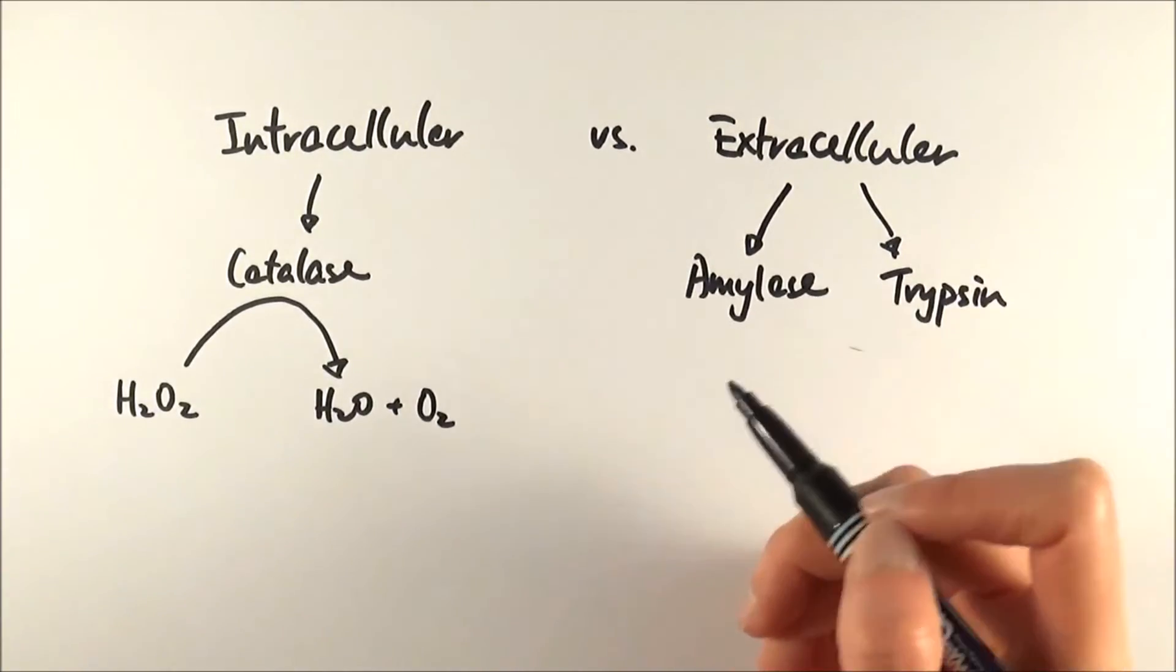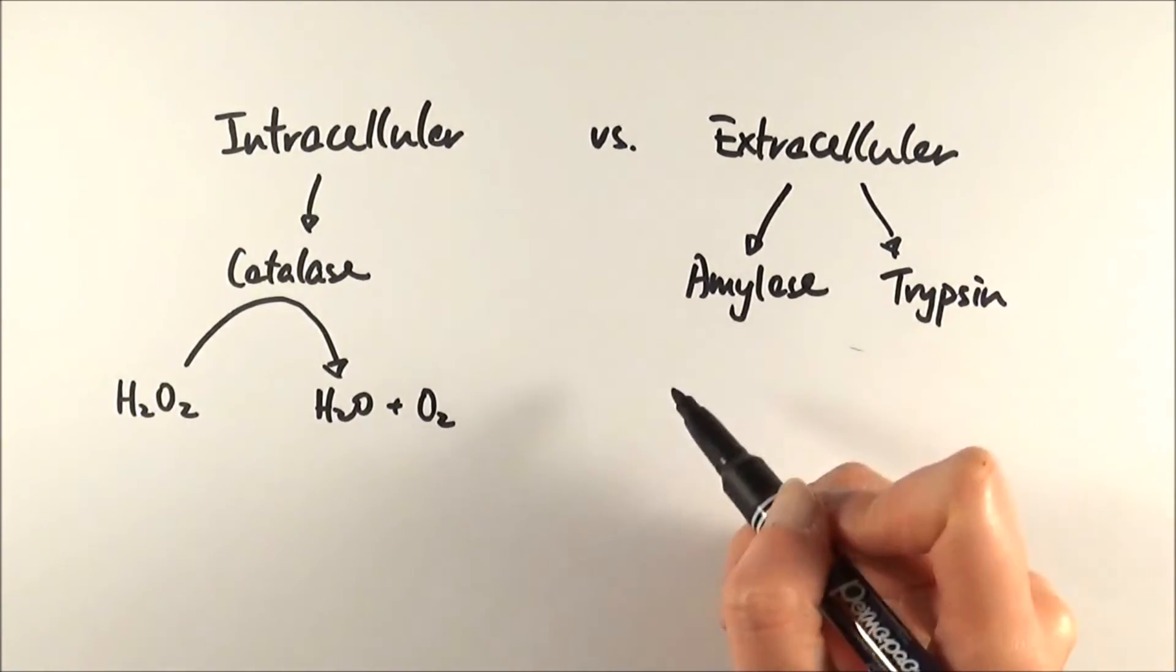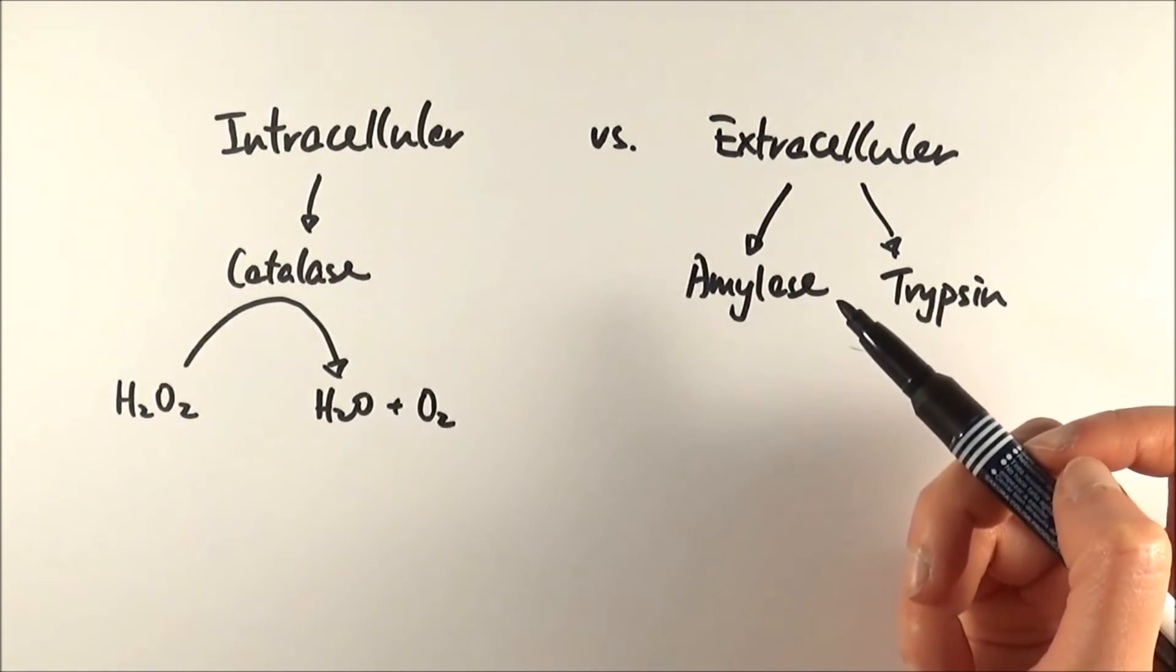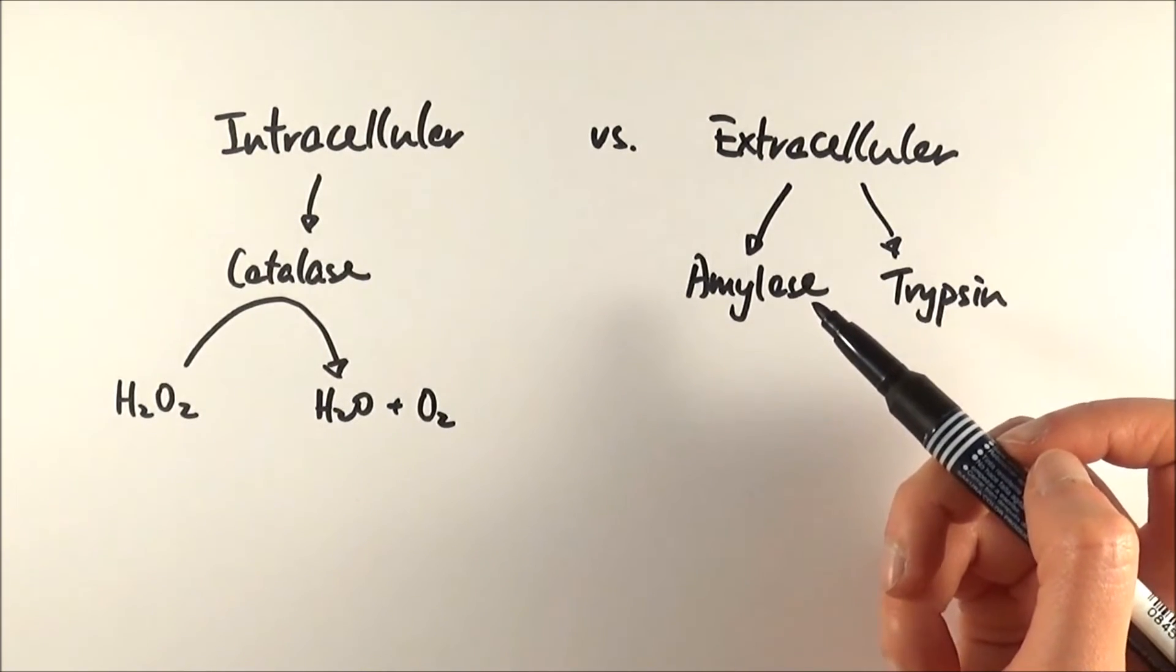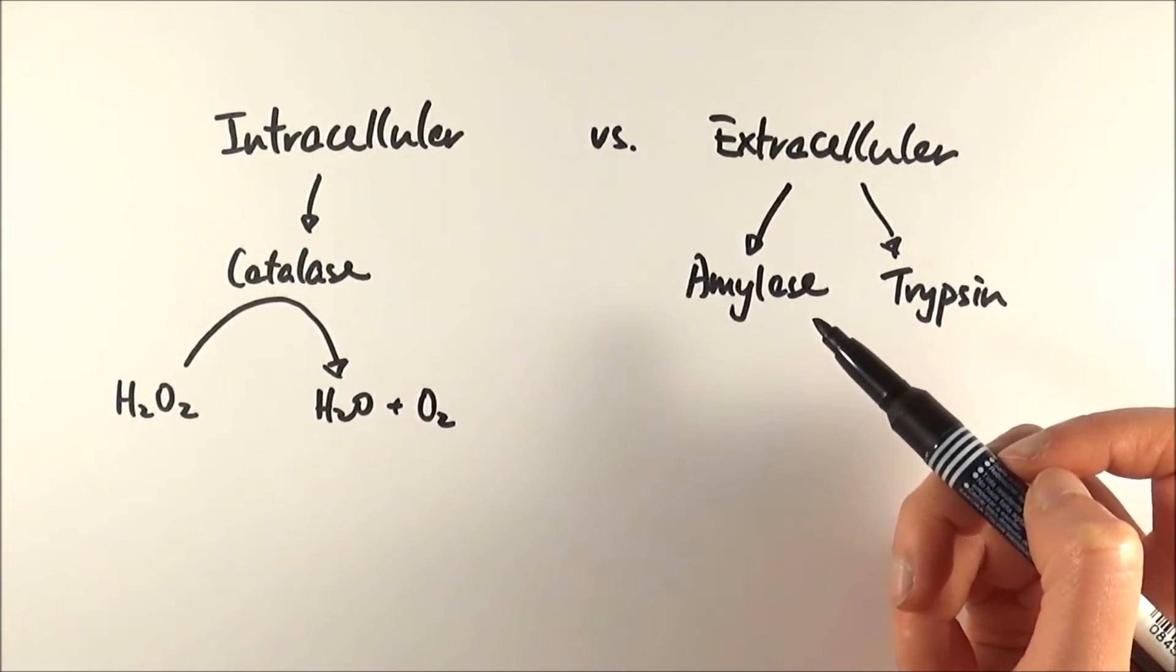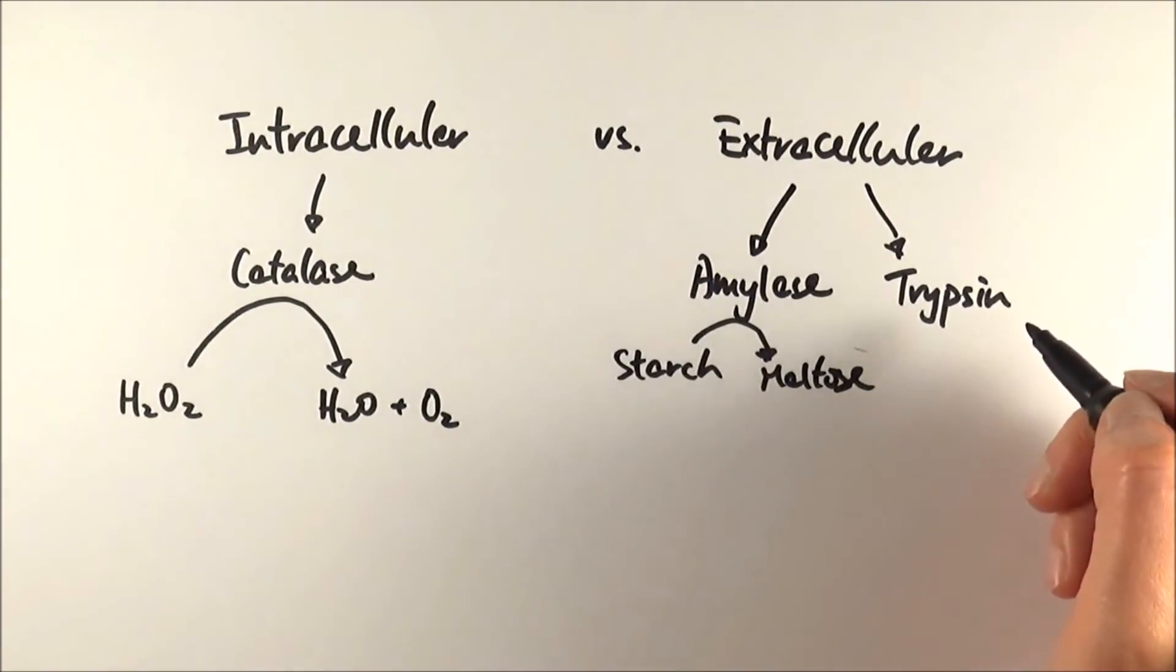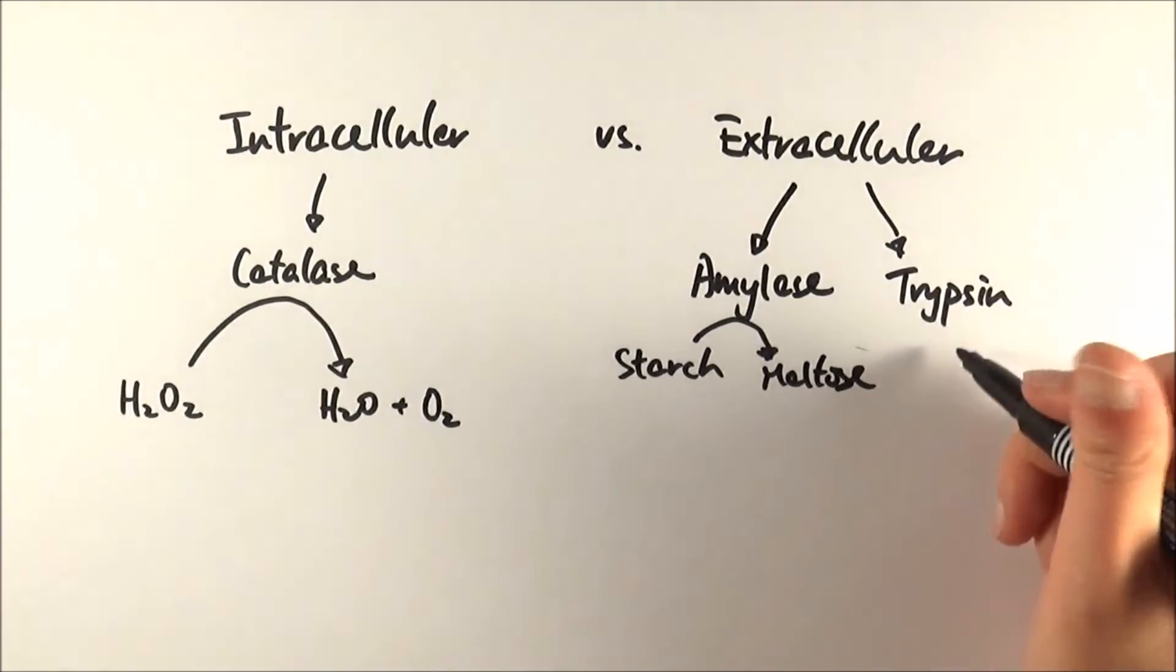Amylase breaks down starch to maltose. You can find two different forms of amylase, one in the mouth which has a pH 7 and one released by the pancreas which works at about pH 8. Whereas trypsin breaks down proteins into amino acids.